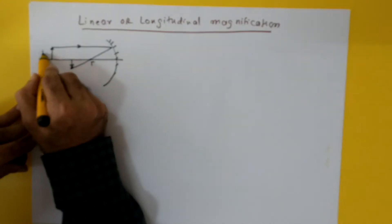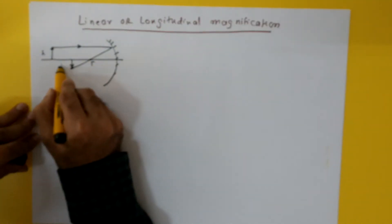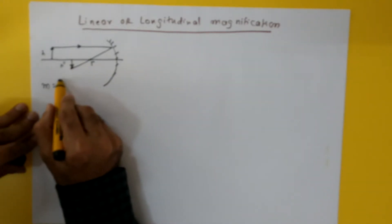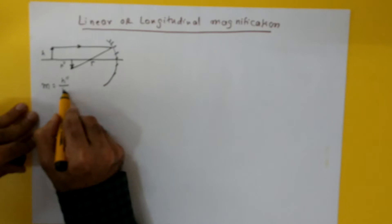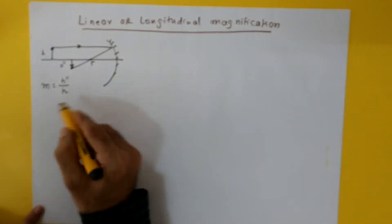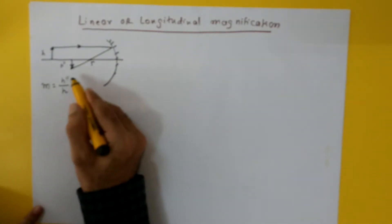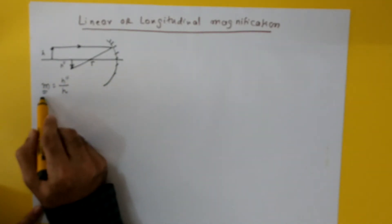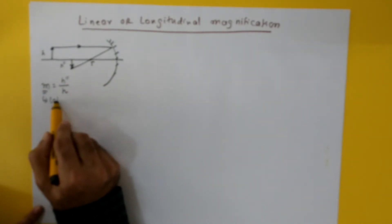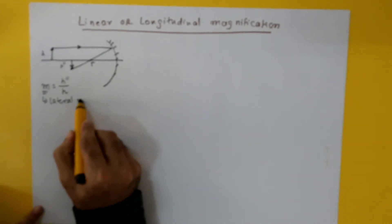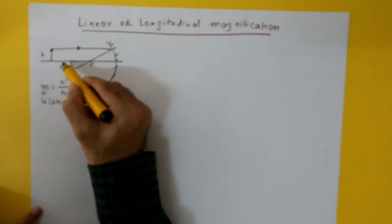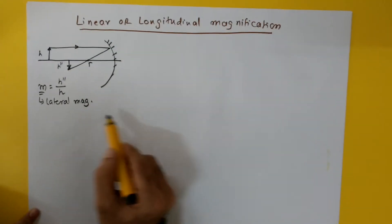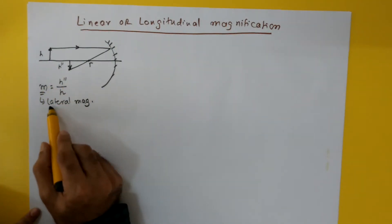If we call the object height h and the height of the image is h', then the magnification is given by h' over h. This tells us how big the image is compared to the object. This is known as lateral magnification, because here the object and the image are perpendicular to the principal axis.